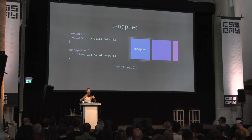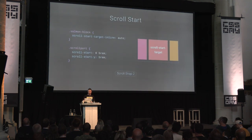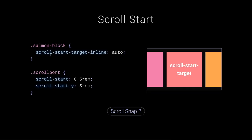Be excited for the :snap-to pseudo-class — anytime something snaps into view you can give it a box shadow, raise it up, all from CSS. Then scroll-start: no more keyframe hacks. You target a specific element and say scroll-start-target: inline auto. That auto flag tells the browser that item wants to be in the starting position on load. You can also offset scroll by a length — like setting scroll-start: 50px to start 50 pixels down, matching your nav bar height.